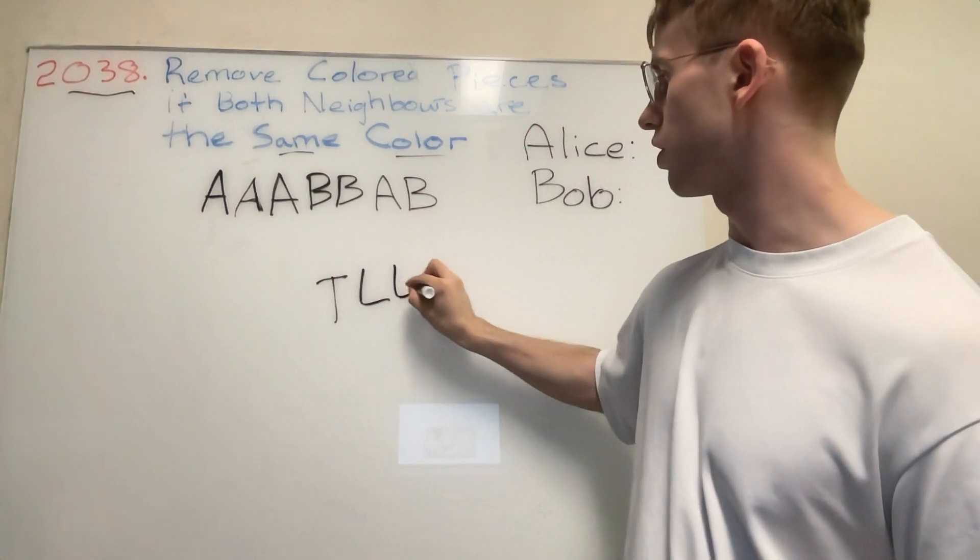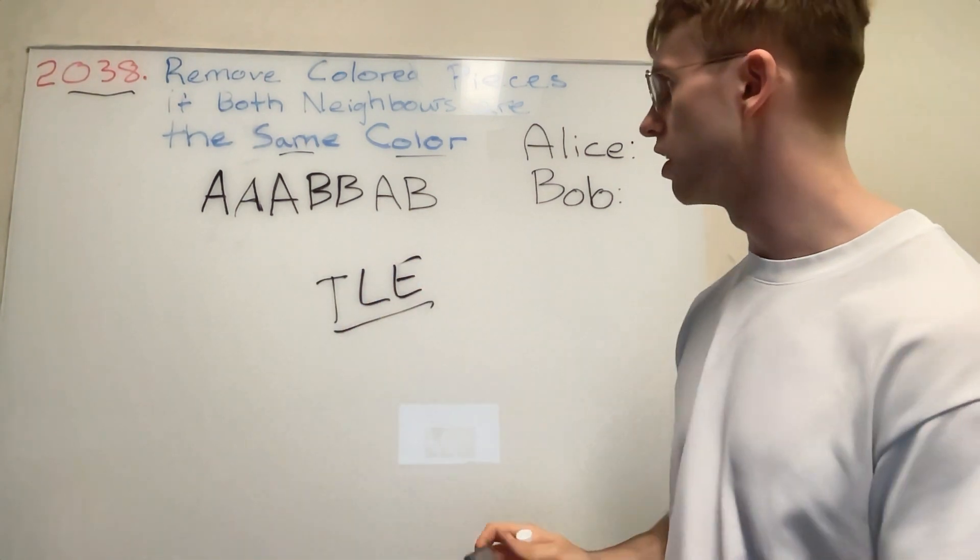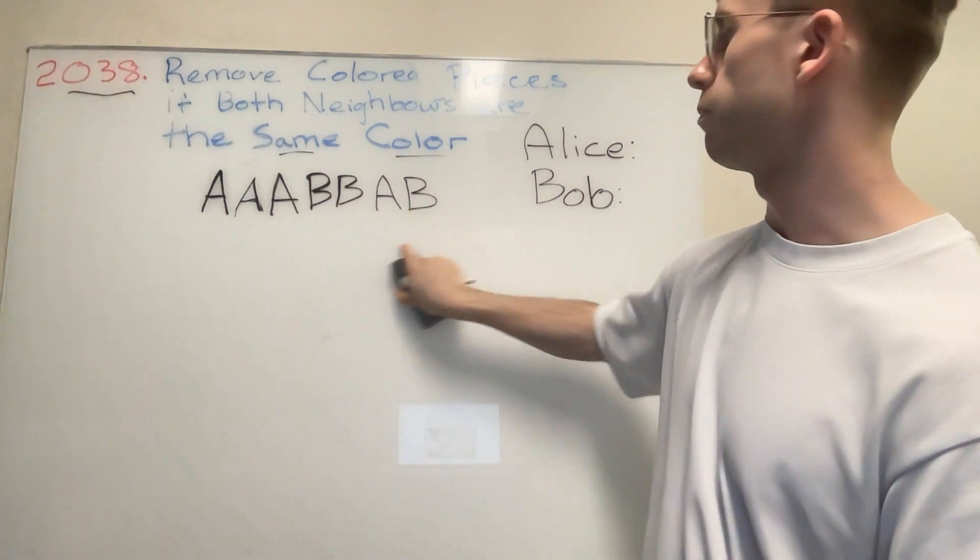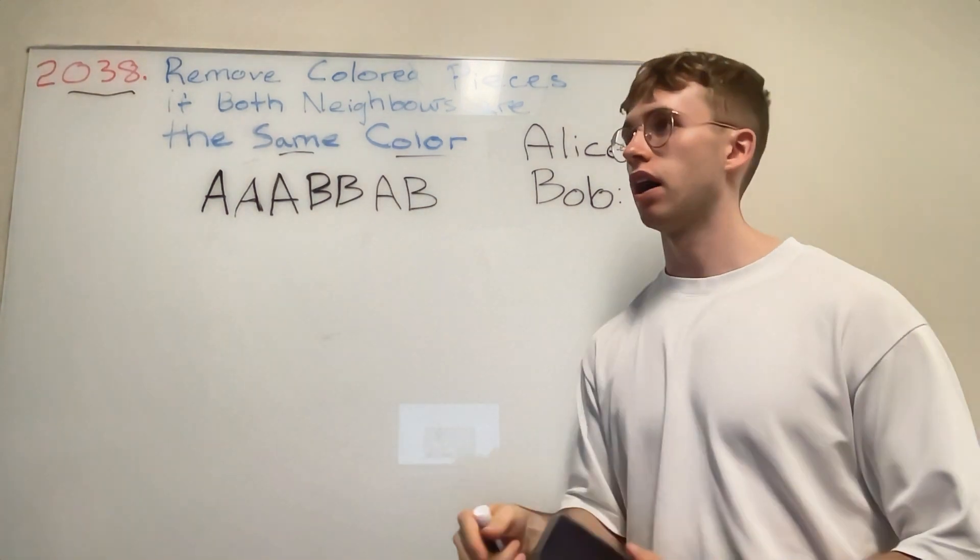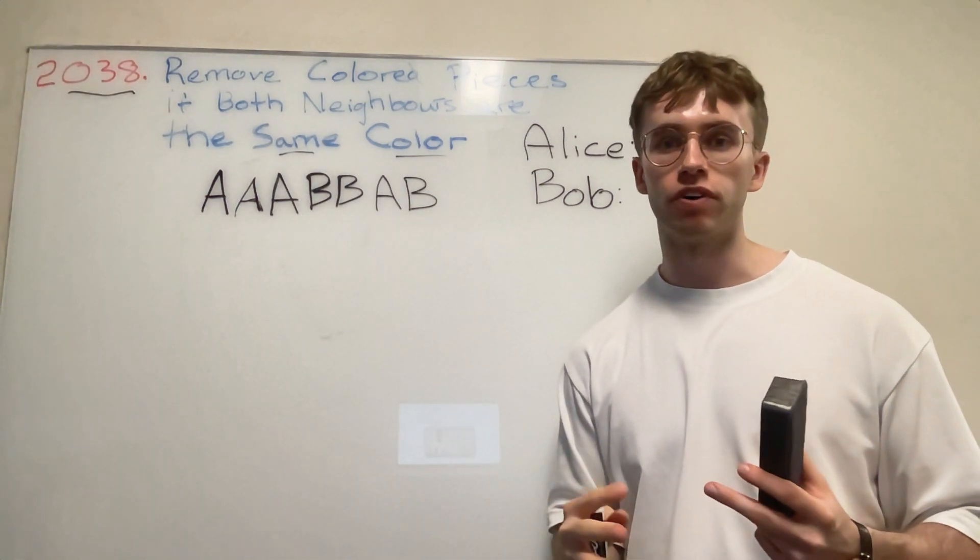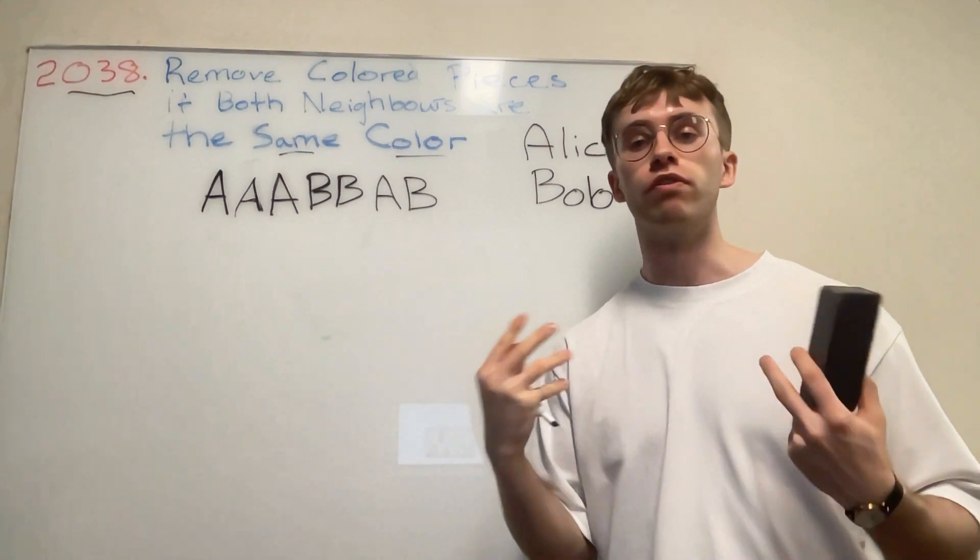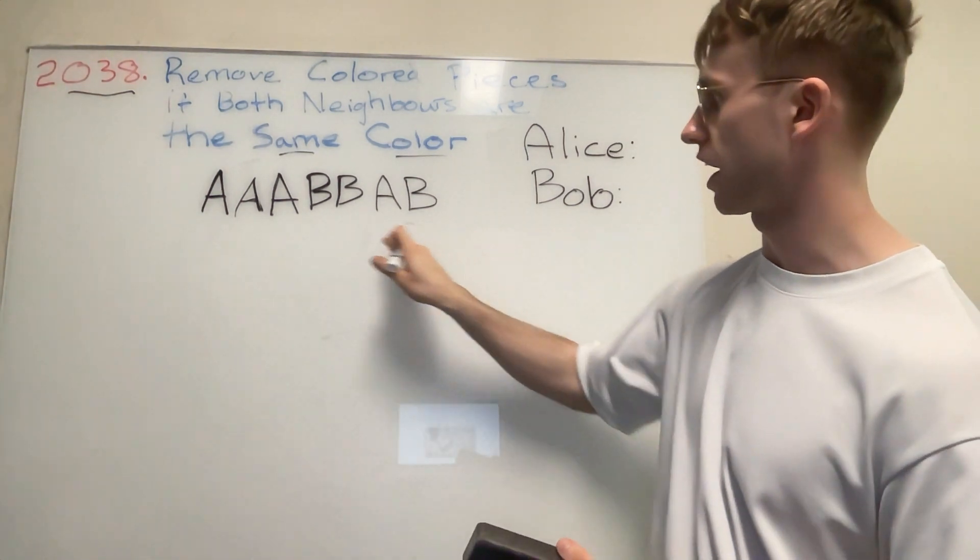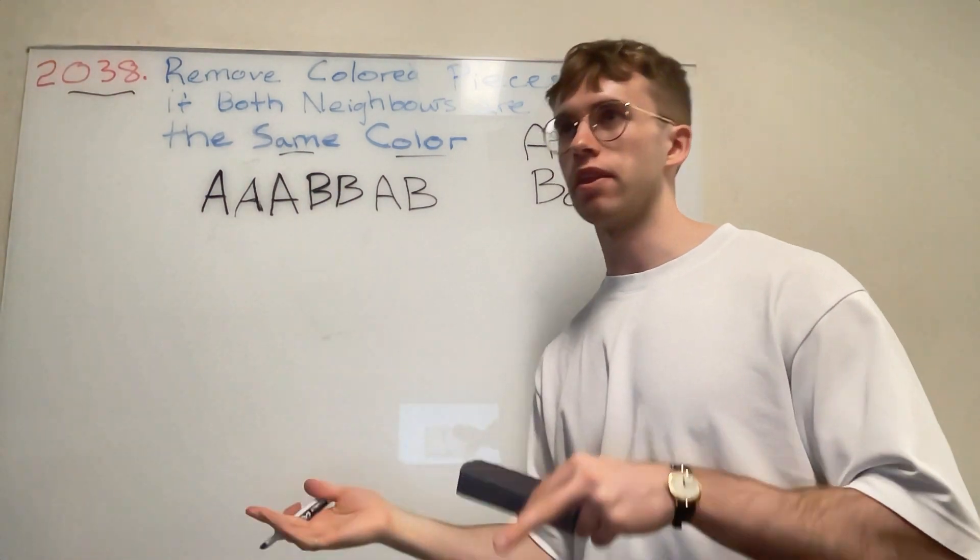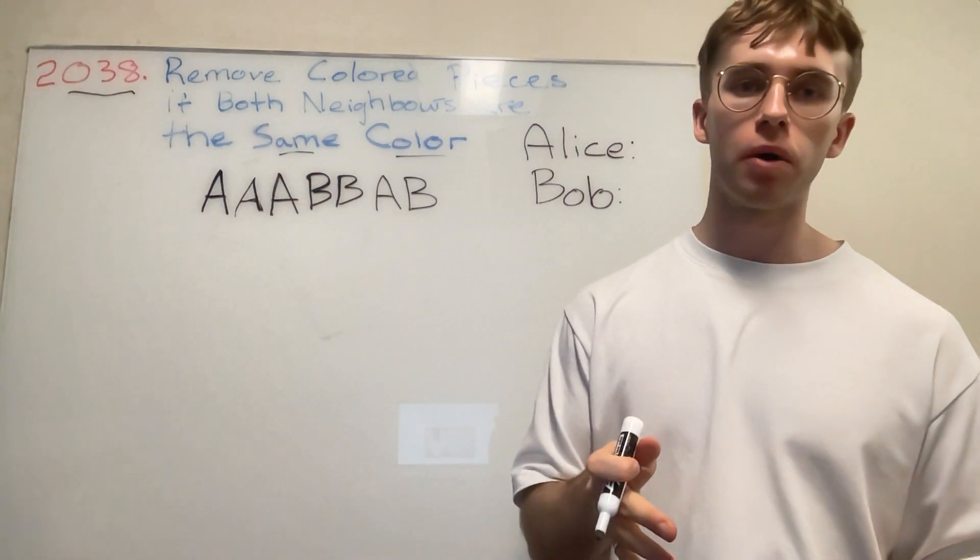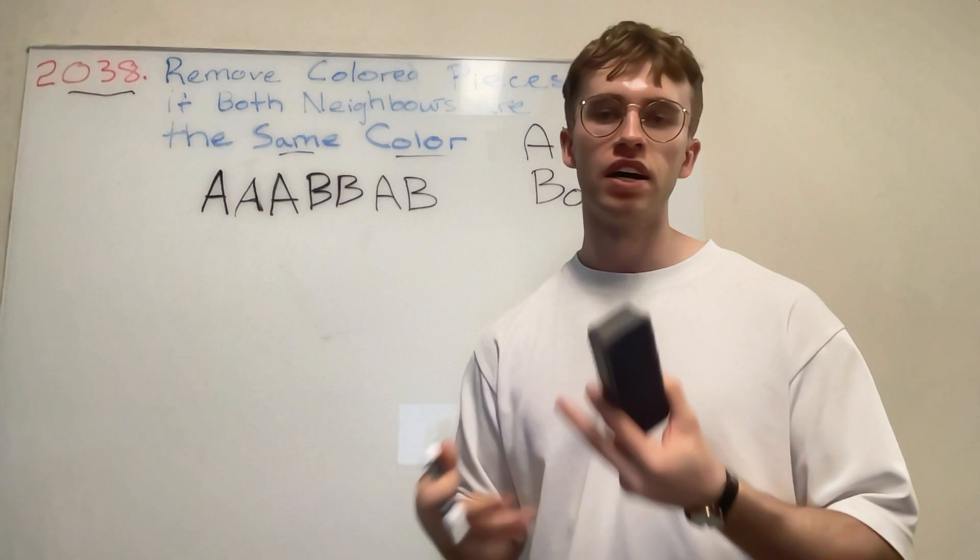In your LeetCode jargon it's called a TLE. That's because with the size of the color string as your input, if we want to actually solve it brute force and say 'okay, if Alice plays optimally this would be Alice's turn, then if we play Bob, then if we play Alice,' and so on,